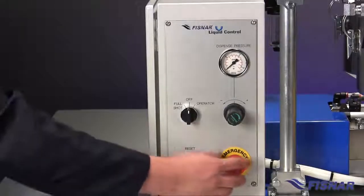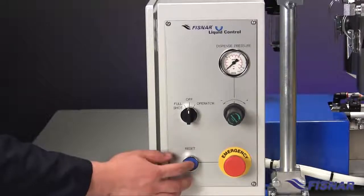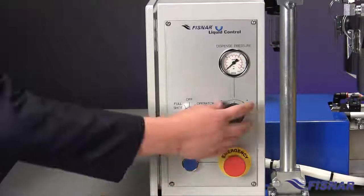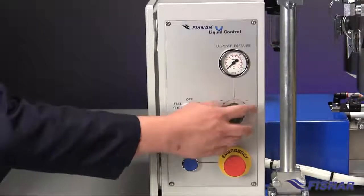Check that the e-stop on the front panel is open. Press the blue reset button and set the dispense regulator to 20 PSI, being the minimum pressure required.